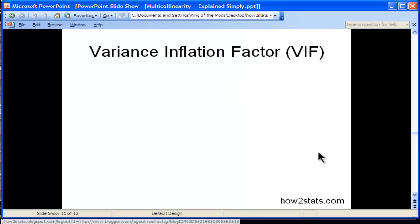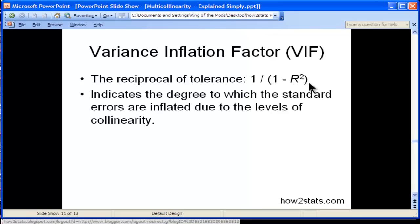Variance inflation factor is simply the reciprocal of tolerance, so it's 1 divided by tolerance. The variance inflation factor, although perfectly correlated with tolerance and fundamentally based on it, gives an indication of the degree to which the standard errors will be inflated due to the levels of collinearity or multicollinearity.